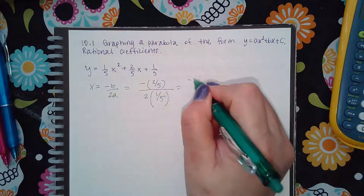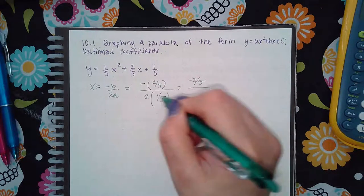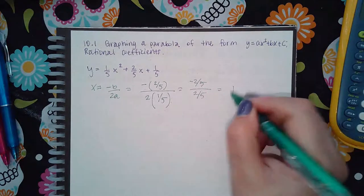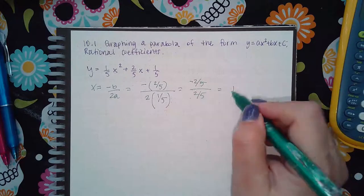If I multiply this, I get negative 2 fifths, and if I multiply this, I get 2 fifths. Well, any number over itself is just 1, and a negative divided by a positive is negative.